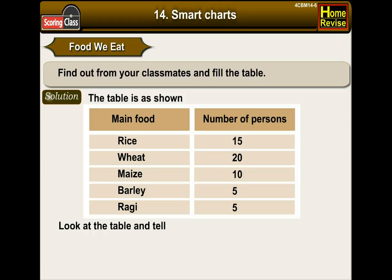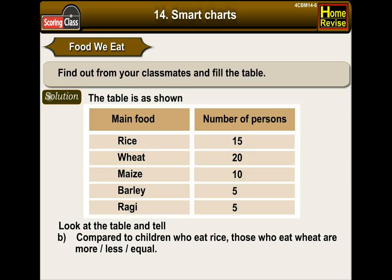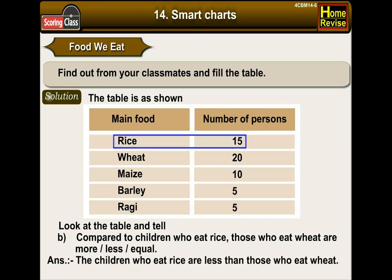Look at the table and tell. A. Most children eat food made from — from the table it is clear that most children eat food made from wheat. B. Compared to children who eat rice, those who eat wheat are more, less, or equal? The children who eat rice are less than those who eat wheat.